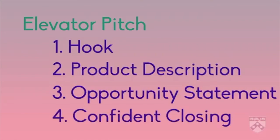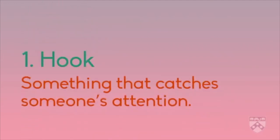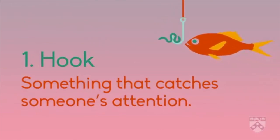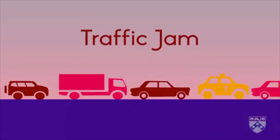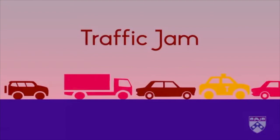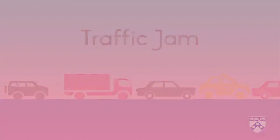Let's look at each part in detail. Part one: a hook. A hook is something that attracts someone's attention, like a hook with a worm that attracts a fish. Often, the hook is about a situation that created the business opportunity. The hook should be brief, just two to three sentences long. Here's an example for the best bicycle delivery service: In my local market, there is so much traffic that it sometimes takes people an hour to drive just a few kilometers. Many local companies can't make deliveries because there is too much traffic.